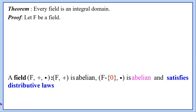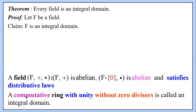11 axioms are satisfied. Now, what do we have to prove? We have to show that f is an integral domain. An integral domain is a commutative ring with unity without zero divisors. Therefore, a commutative ring with unity without zero divisors is called an integral domain.